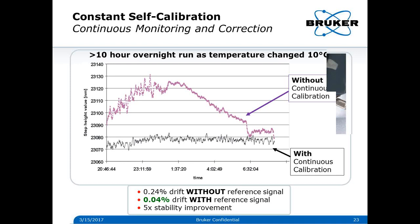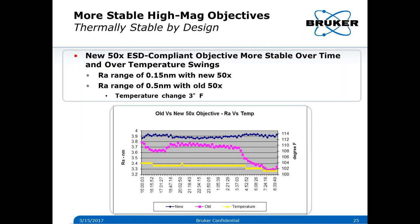Our objectives are now more thermally stable compared to past objectives. In a test shown here, we purposely shifted the temperature in the lab by 3 degrees on a 50x — the old-style 3300 objective in pink shows the Ra measurement drifting with the temperature on a stable LATCH surface. Our newer objectives are athermal, or thermally more stable, so the focus is not affected as much. We're talking sub-nanometer type changes, but some applications require this type of stability, and these new objectives automatically come with that stability.